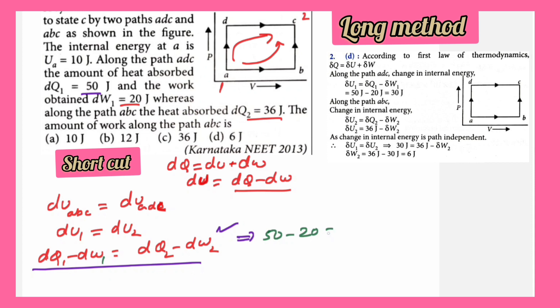This implies that we can write here dQ1 is going to be 50 minus dW1 is going to be 20, equals dQ2 which is going to be 36 minus dW2. Our aim is to find out dW2. Therefore this is going to be 30, and 36 minus 30 is going to be 6 joules, which is your answer.